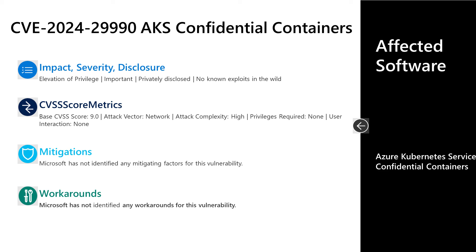An attacker does not need to be authenticated here. There is a scenario where an unauthenticated attacker can move a workload onto a machine they already control, where that attacker is root — which is why privileges are not required, since the workload can be moved to a machine where the threat actor already has access. There are no documented mitigations or workarounds for this vulnerability.